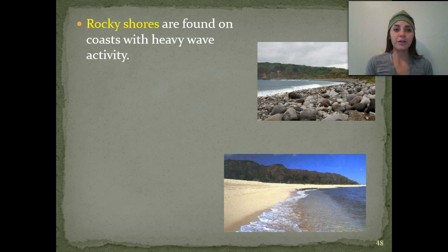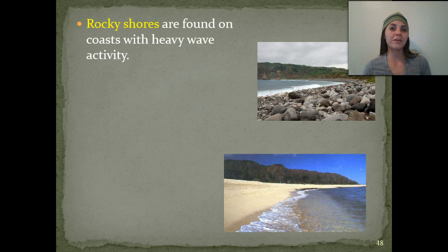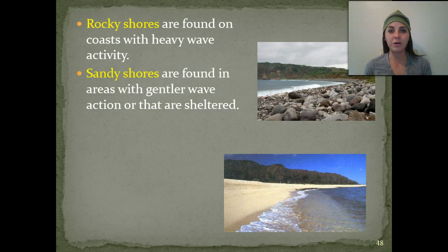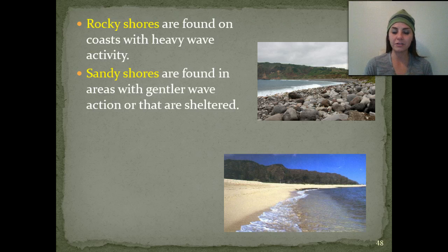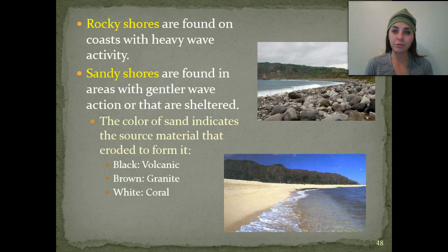The physical nature of shores in the intertidal zone can vary greatly. Rocky shores are found on coasts with heavy wave action. Sandy shores are found in areas with gentler wave action that are sheltered, such as in the Gulf of Mexico, including the Galveston area, as well as Florida. The color of sand actually indicates the source material it eroded from: black sand eroded from volcanic ash, brown sand from granite, and white sand is actually eroded from coral.